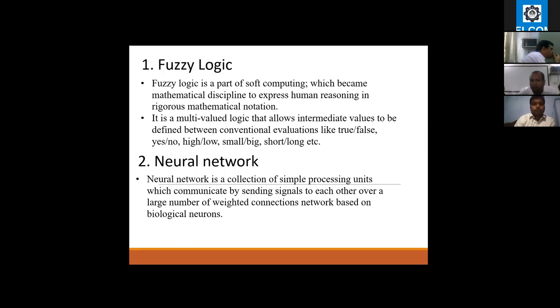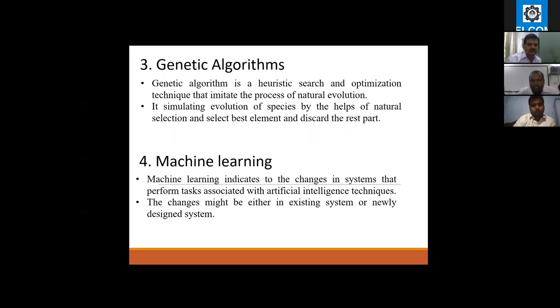Neural network is a collection of simple processing units which communicate by sending signals to each other over a large number of weighted connections. The network is based on biological neurons. Genetic algorithm is also about fitness - you have to find out the fitness of your concept.